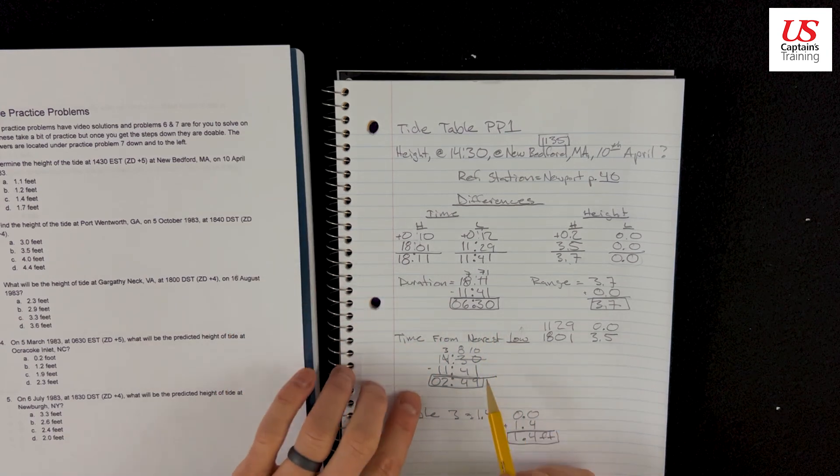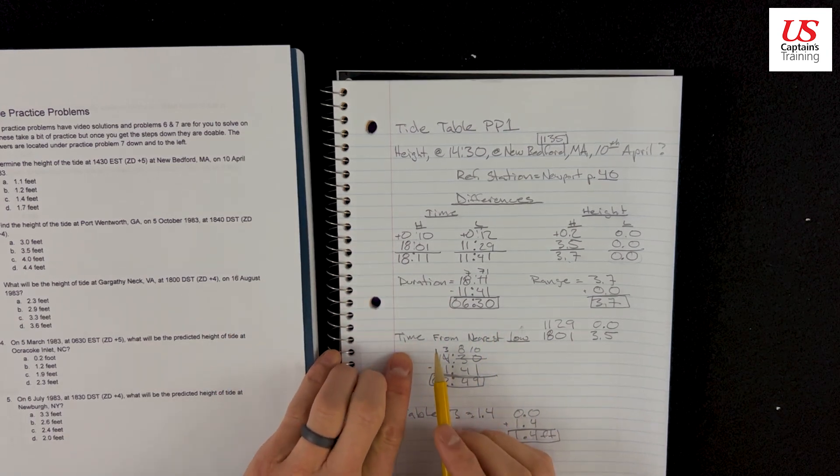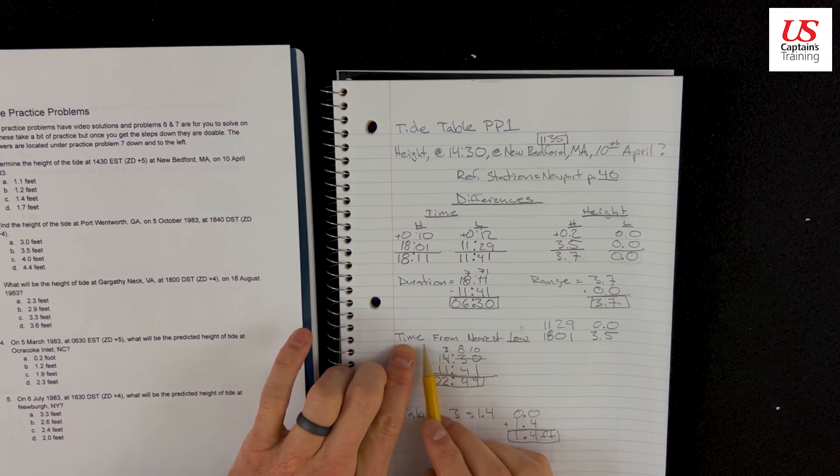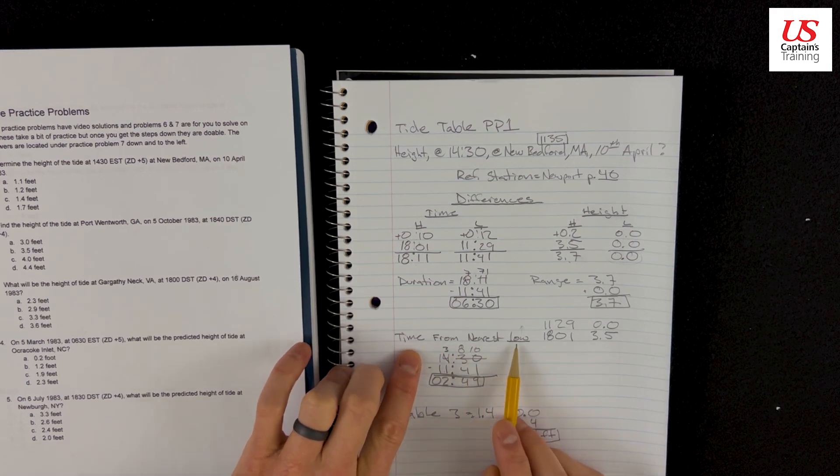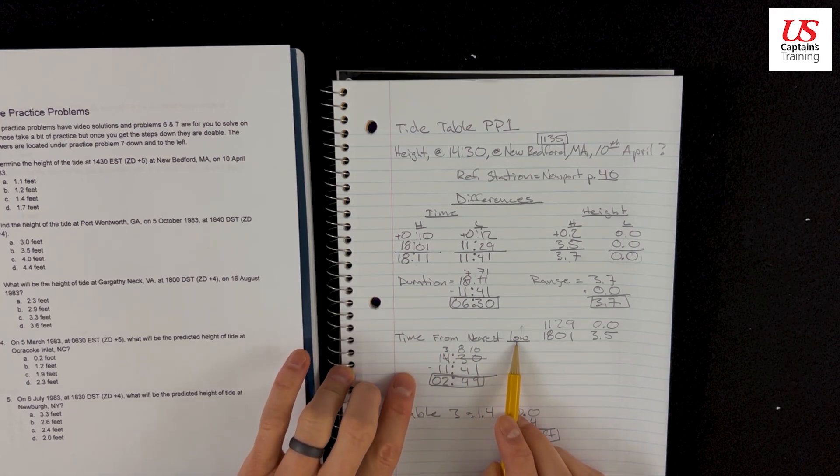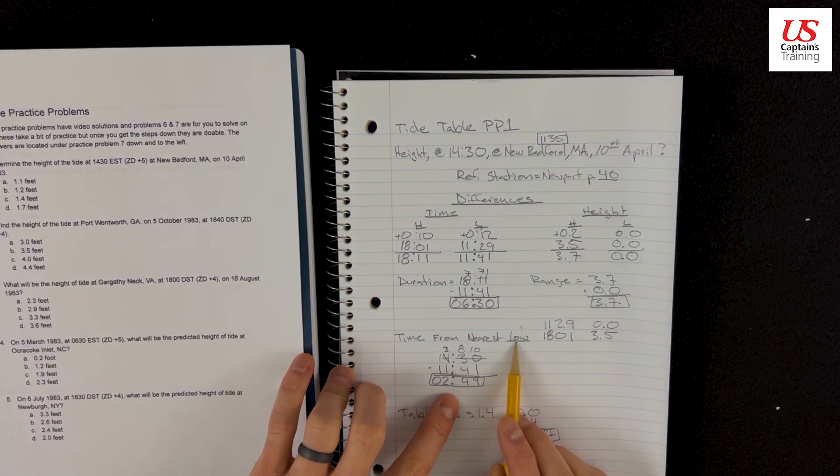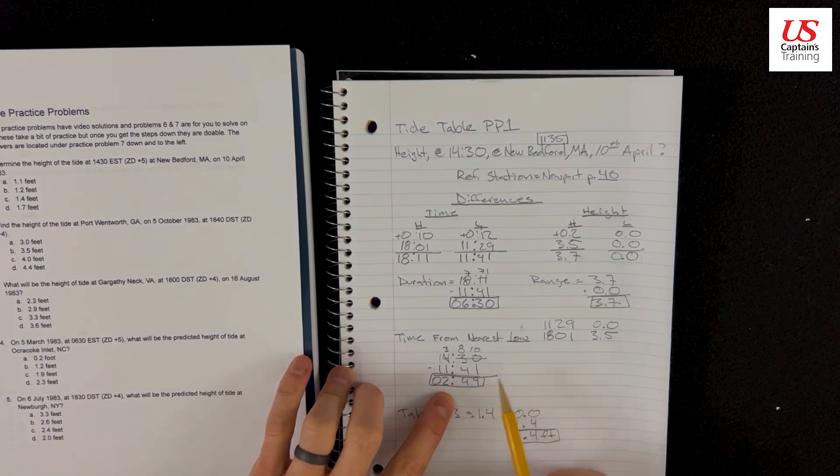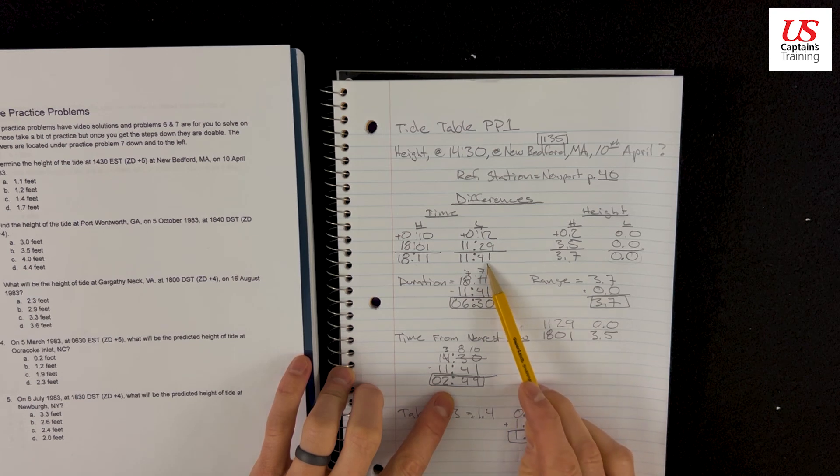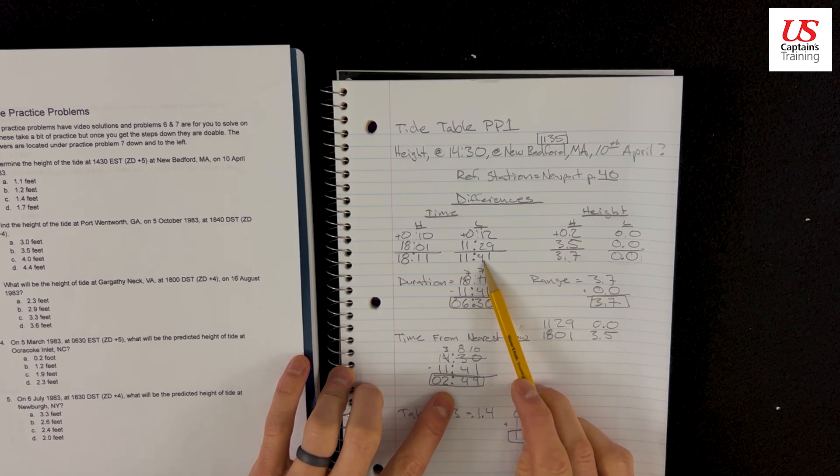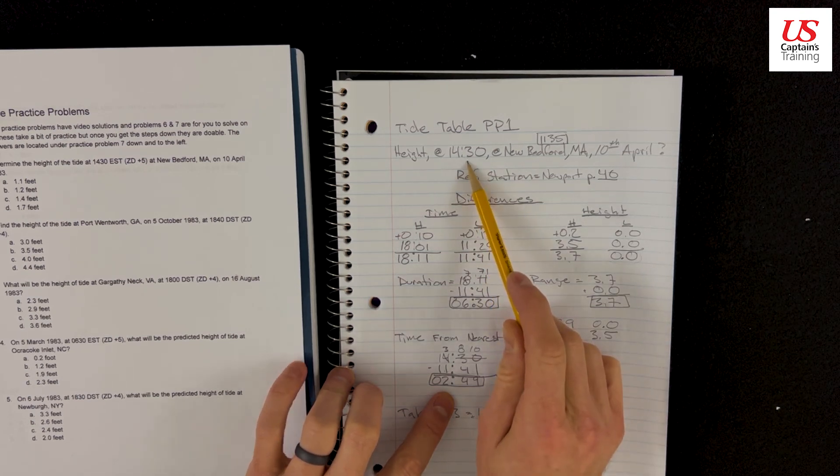And the last thing we need to do to go into table 3 is we need the time from the nearest tide, and we have to figure out, are we nearer to the low or the high? Well, in this case, we are nearer to the low because the low is at 11:41, and 11:41 is closer to 14:30 than 18:11 is. And we can double check it.